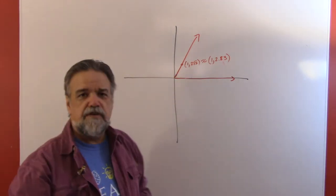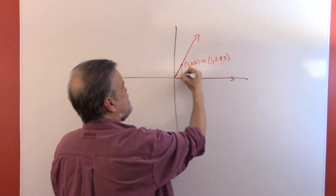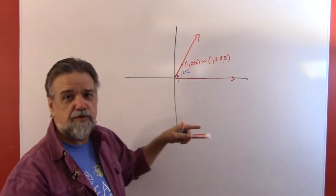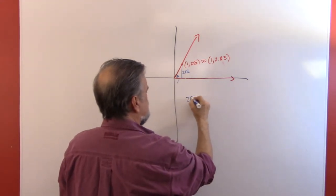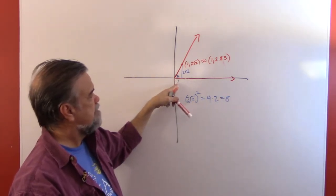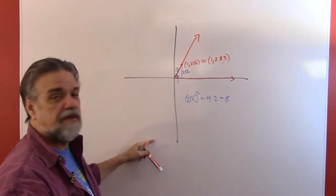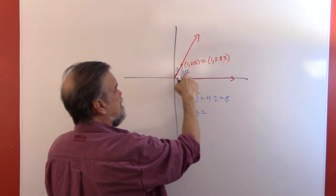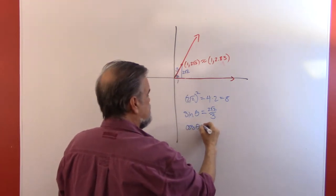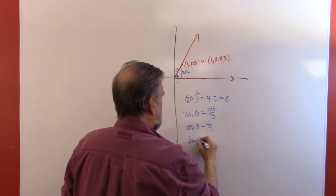Same approach: drop down a vertical segment to form a right triangle. The horizontal leg is 1, the vertical leg is 2√2. Now: 1² = 1, and (2√2)² = 4·2 = 8. So the hypotenuse squared is 1 + 8 = 9, meaning the hypotenuse is 3. Therefore, sine of theta = 2√2/3, cosine of theta = 1/3, and tangent of theta = 2√2.